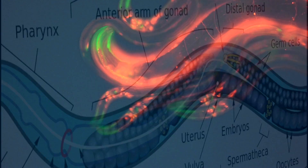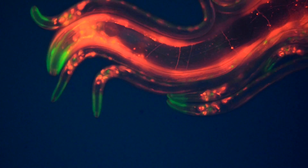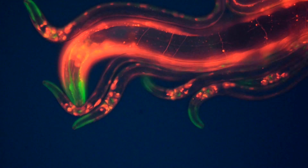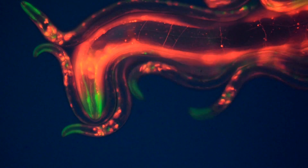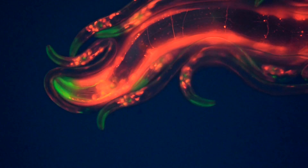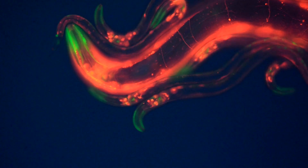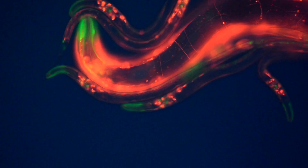The development of C. elegans is a highly choreographed process where the instructions for building the worm must already be present in its very first cell.